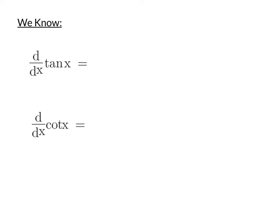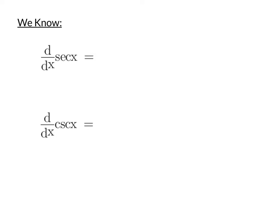When we look at the derivatives of tangent and cotangent, the derivative of tangent is secant squared and the derivative of cotangent is negative cosecant squared. Since both involve squared terms, finding the integrals of secant and cosecant will be a bit more difficult. Also helpful are the derivatives of secant and cosecant: the derivative of secant is secant tangent, and the derivative of cosecant is negative cosecant cotangent.